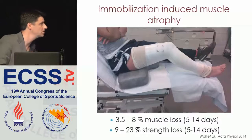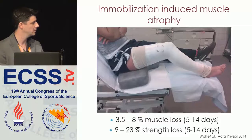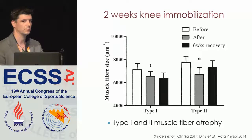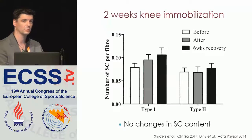What we can do is look at other atrophy models. We used immobilization studies — different immobilization models anywhere between 5 and 14 days using a plaster cast of the full leg. Anywhere between 5 and 14 days, you would lose on average 3.5 to 8 percent of your muscle determined by CT scans, and anywhere between 9 and 23 percent of muscle strength, depending on how long you immobilize. After two weeks of immobilization, you see a decrease in muscle fiber size — about 7 percent for type 1 and about 13 percent for type 2 — recovered after six weeks of natural recovery. Yet we see absolutely no changes in satellite cell content.